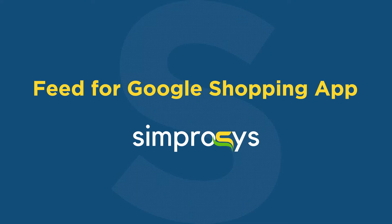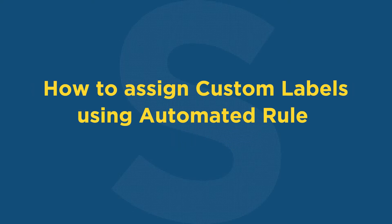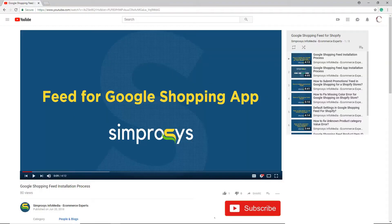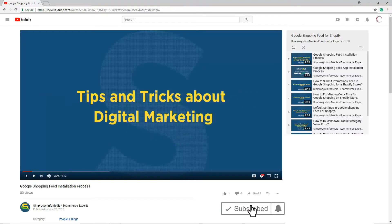Hello friends, welcome to the help videos of Feed for Google Shopping app. In this video we are going to see how to assign custom labels in our app using an automated rule. Please subscribe to our channel to get tips and tricks about digital marketing, and press the bell icon to get notified instantly once we upload any new video.